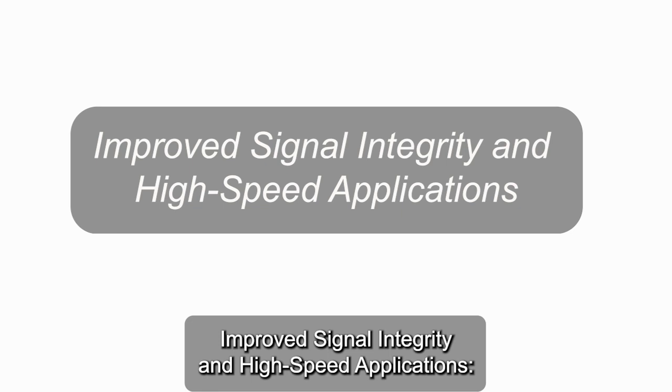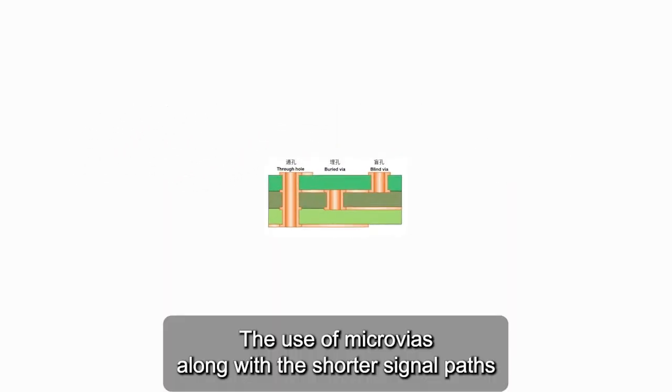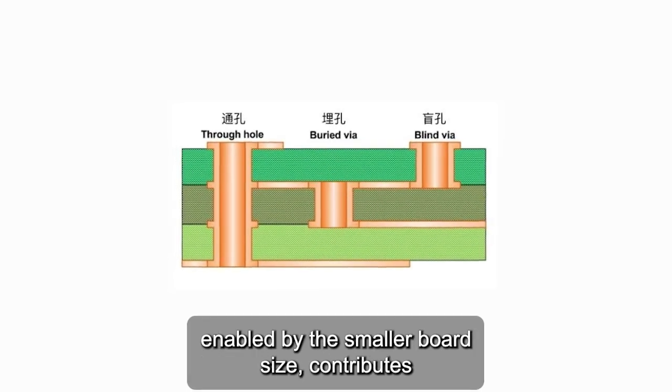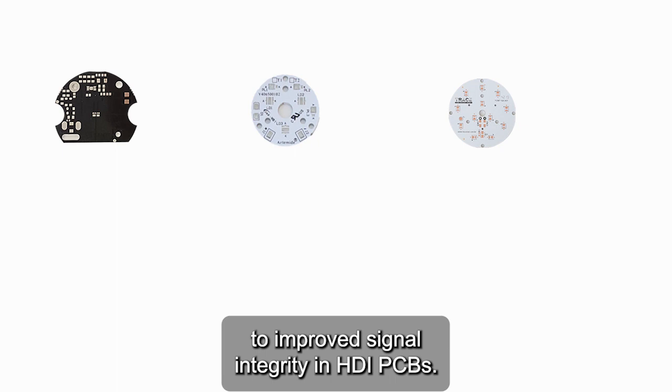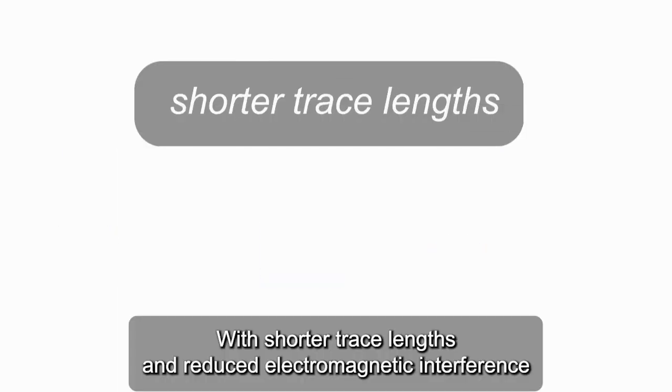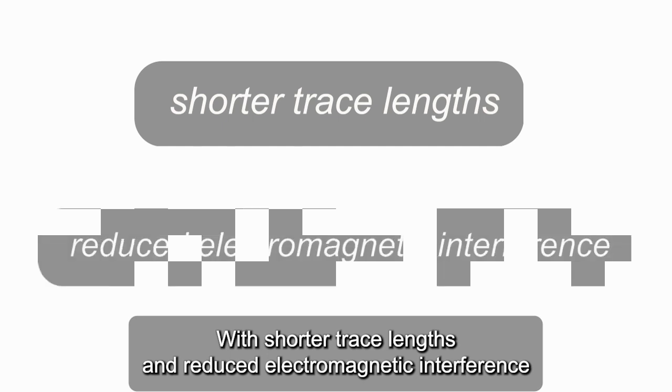Improved Signal Integrity and High-Speed Applications. The use of microvias, along with the shorter signal paths enabled by the smaller board size, contributes to improved signal integrity in HDI PCBs. With shorter trace lengths and reduced electromagnetic interference,